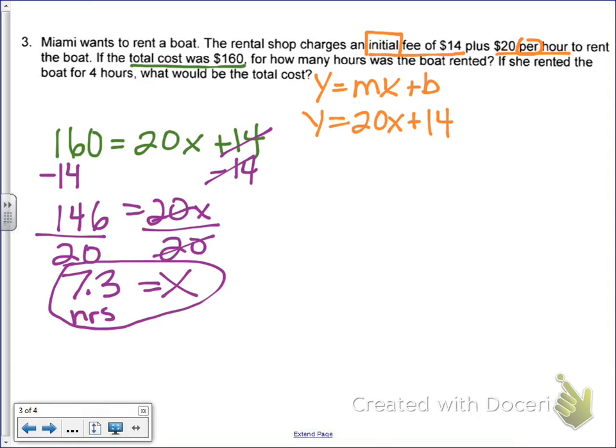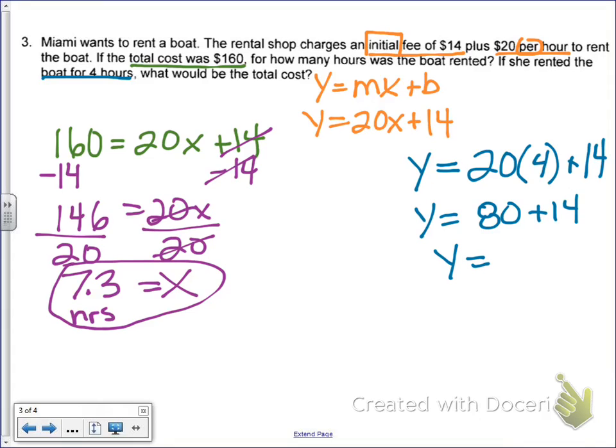All right, the next thing we're going to figure out is the second question, which tells me that if she rented the boat for 4 hours, so this time we know the time, 4 hours, so that gets plugged in for x this time, so 20 times 4 plus 14, what was the total cost of renting the boat? So total cost or money is y. All right, so 20 times 4 equals 80. And 80 plus 14 equals 94.